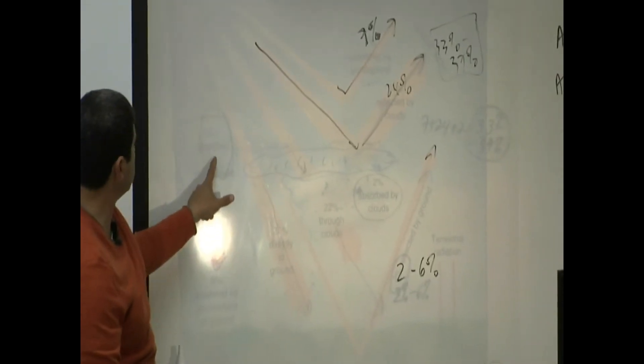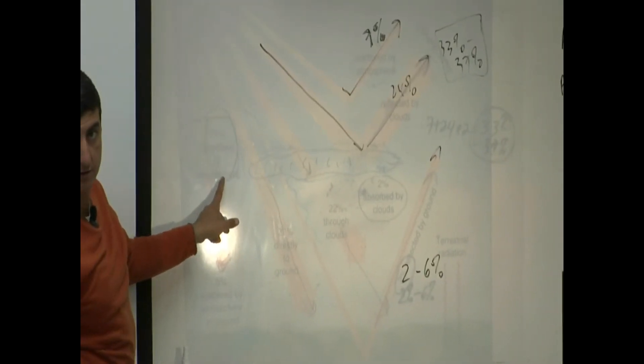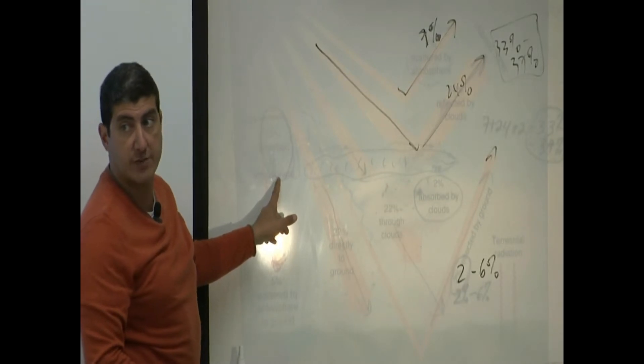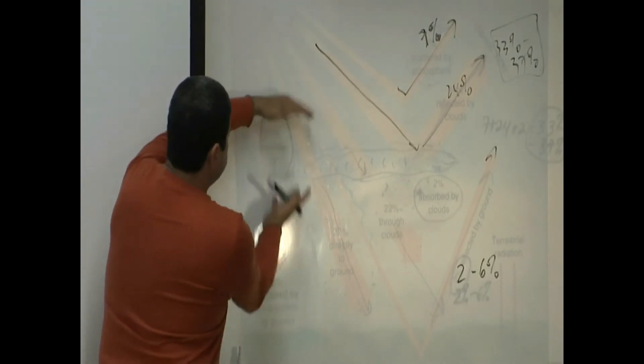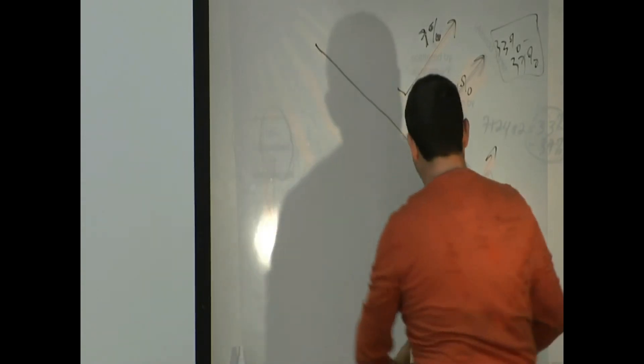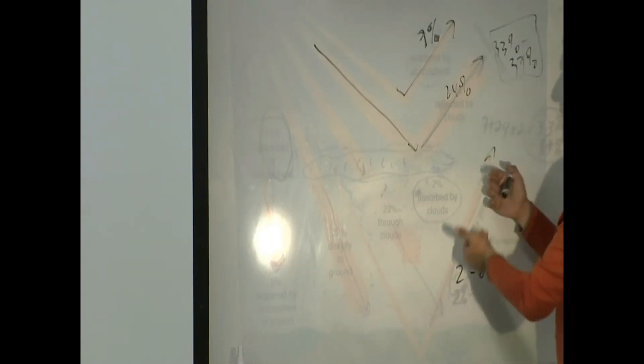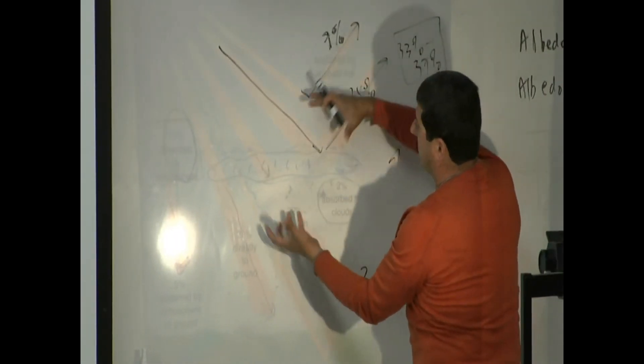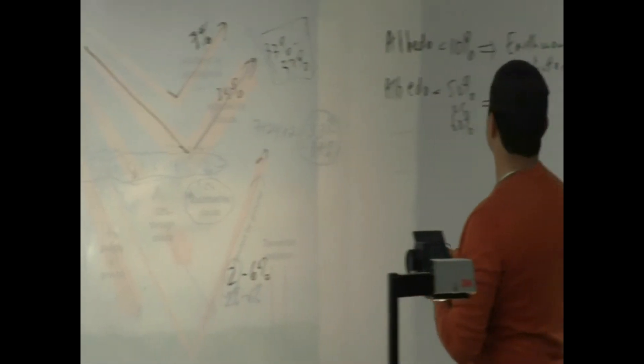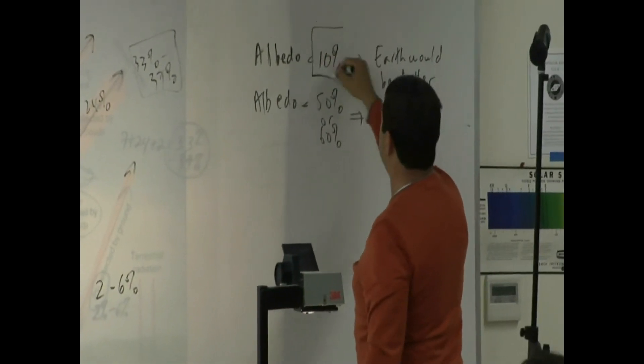You see here where it says 15% absorbed by atmosphere? So what we're afraid of is that when the carbon dioxide goes up, it absorbs more energy and doesn't allow the ground to reflect back. So instead of reflecting a lot of it, it absorbs it. So we're afraid that the carbon dioxide will cause this problem.